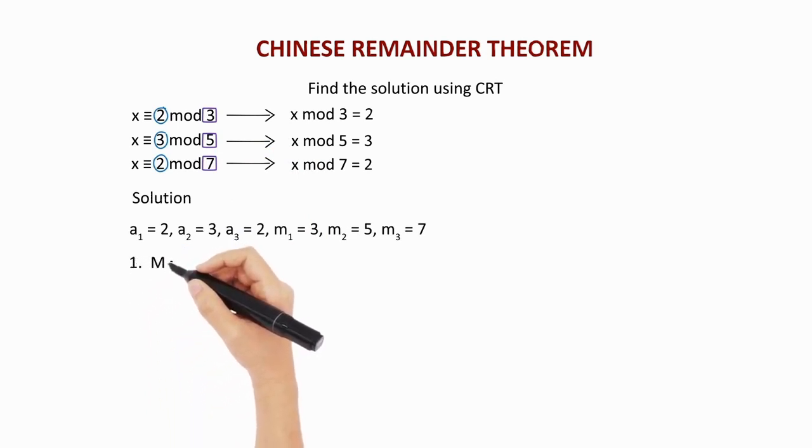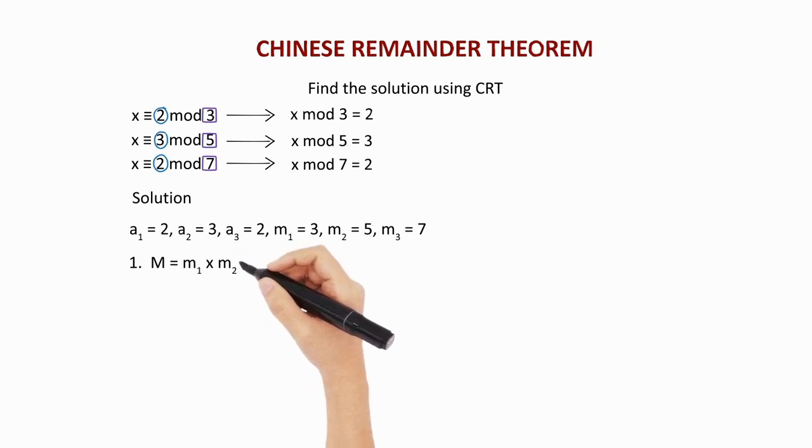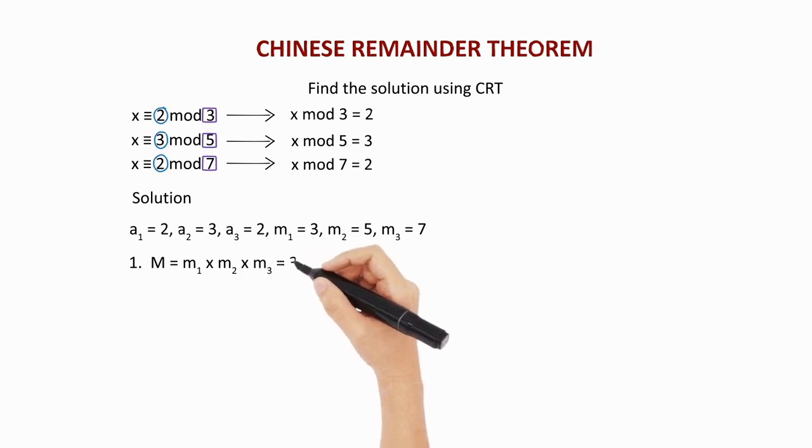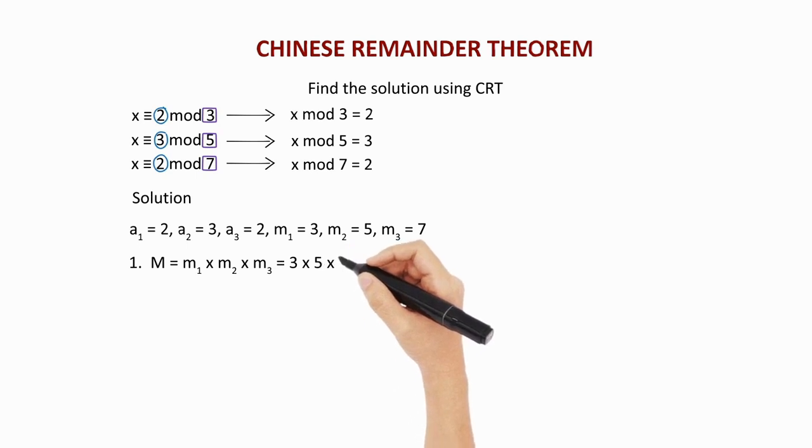Now, the first step is find capital M. The formula is m1 times m2 times m3, which is 3 times 5 times 7, giving you the answer as 105.